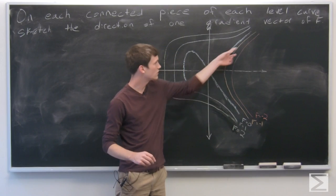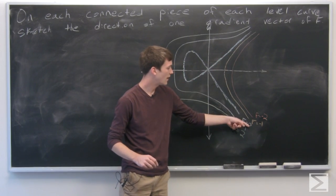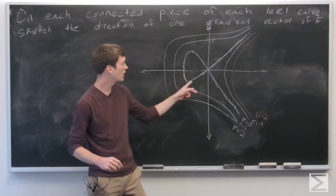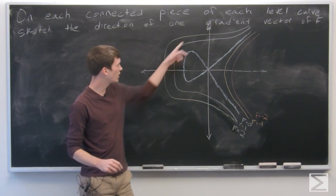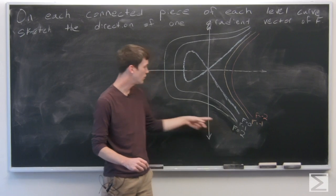f is negative 1 on this orange line, f is 0 on this dark blue line in the middle, f is 1 on this light blue line, and f is 2 on green.